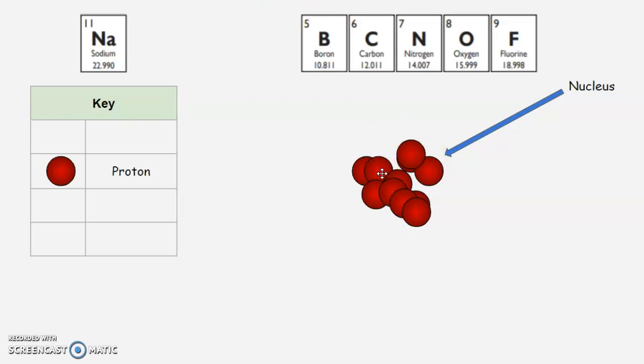So how do we determine the number of protons we have in the nucleus? Well, you need to look at the periodic table. And when you look at the periodic table, you look at each box.